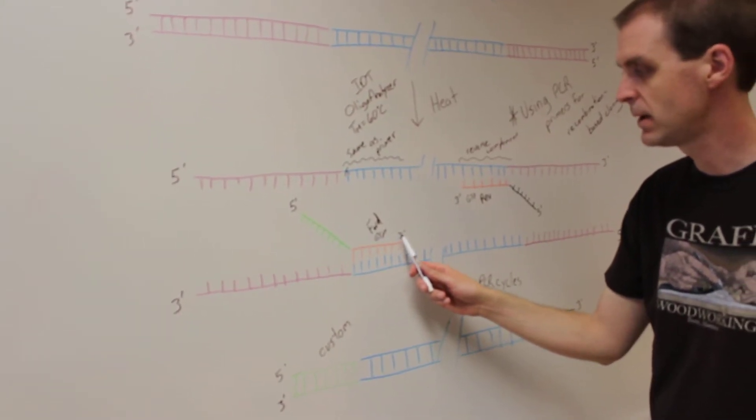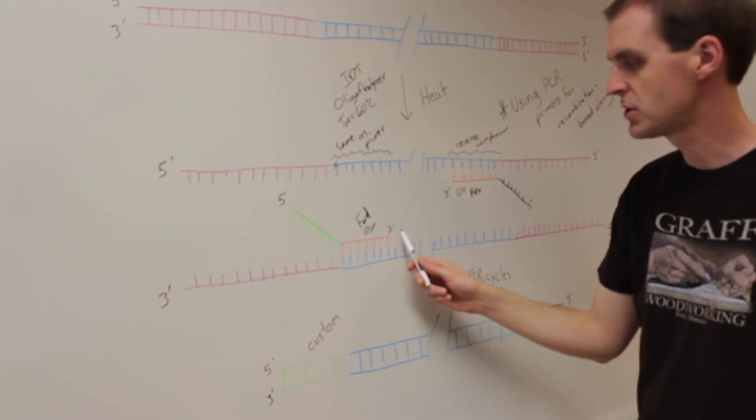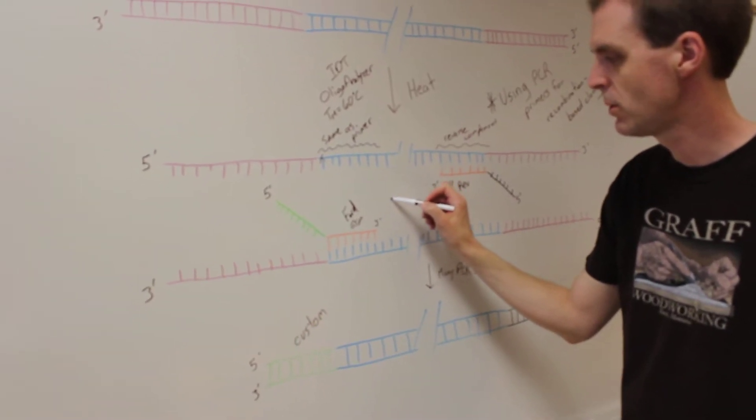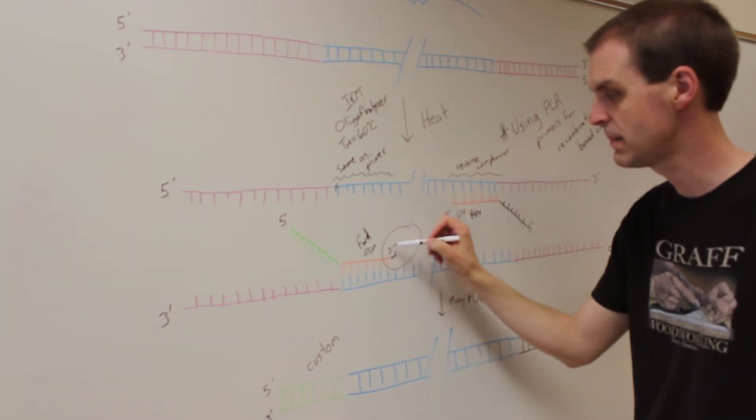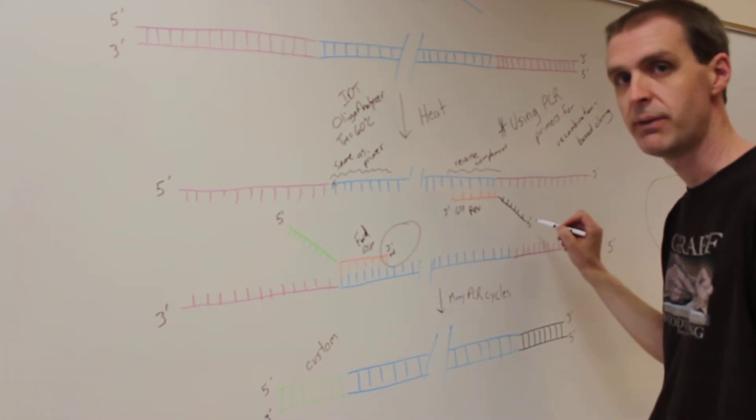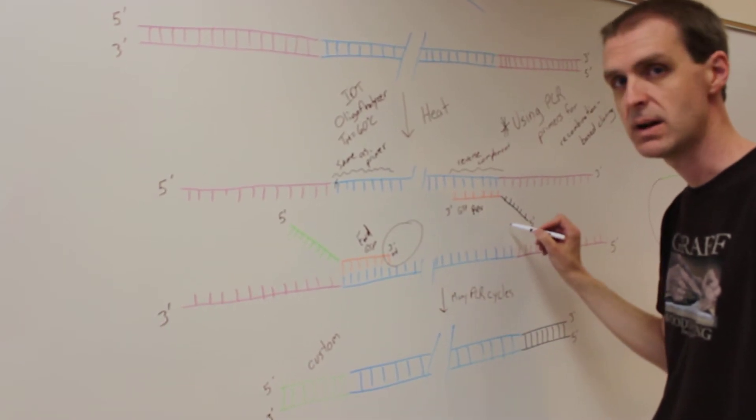The 3' end of the primer is the gene-specific portion, because of course the whole point of a primer is to provide a 3' hydroxyl for the polymerase to come down, bind, and follow, create the next strand of DNA.